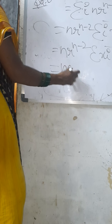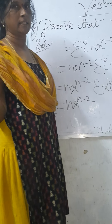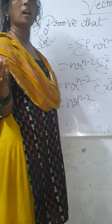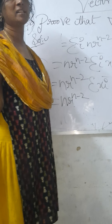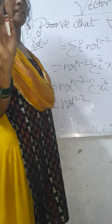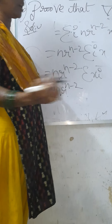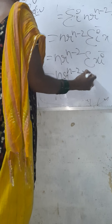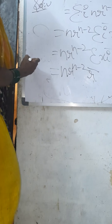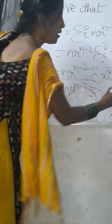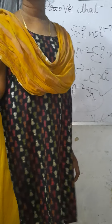This can be written as n r power n minus 2 times sigma xi bar, which means xi bar plus yj bar plus zk bar. That is r bar, since we already introduced r bar equals to xi bar plus yj bar plus zk bar. Therefore, sigma xi bar equals r bar. So del of r power n equals to n r power n minus 2 into r bar. Thank you.